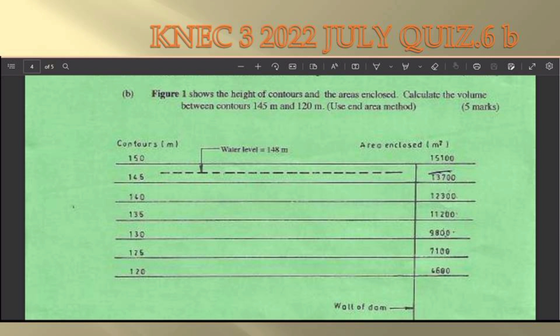The figure below shows the height of contours and the areas enclosed. Calculate the volume between contours 145 meters and 120 meters by use of end area method. The diagram provided shows an example of a reservoir with spot heights written in contours.